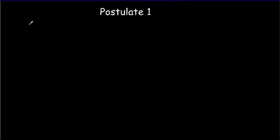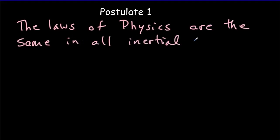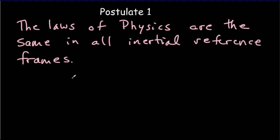So let's write down our first postulate. It simply says: the laws of physics are the same in all inertial reference frames. A very innocent-looking statement. We need to explain what we mean by the laws of physics being the same, and what we mean by an inertial reference frame.